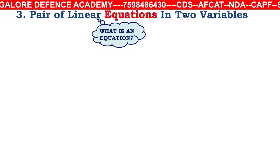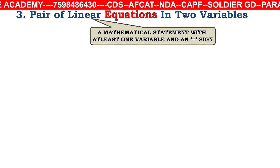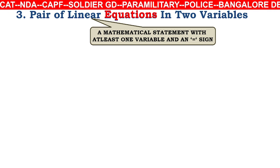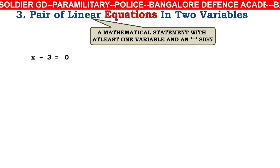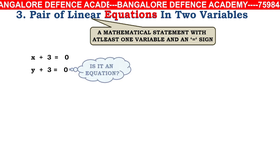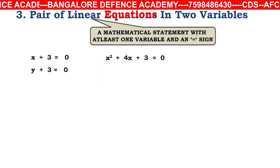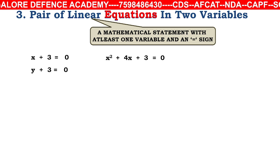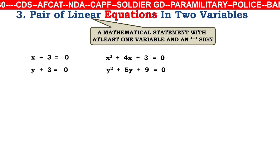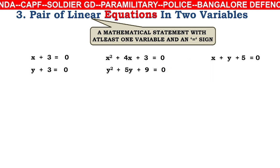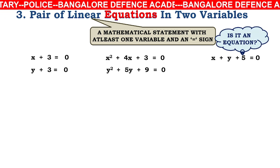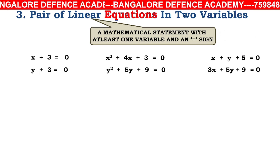First, what is an equation? A mathematical statement with at least one variable and an equal-to sign is called an equation. For example, x+3=0 is an equation, y+3=0 is an equation, x²+4x+3=0 is an equation, y²+5y+9=0 is an equation, and x+y+5=0 and 3x+5y+9=0 are also equations.